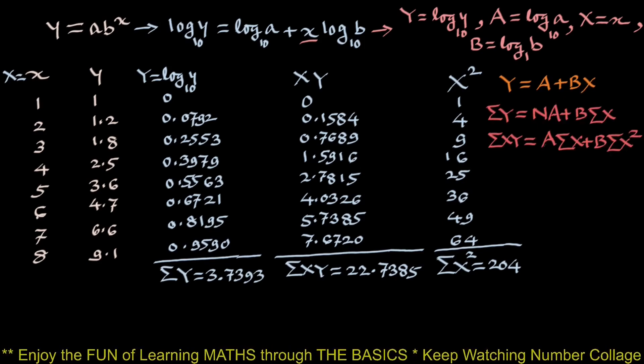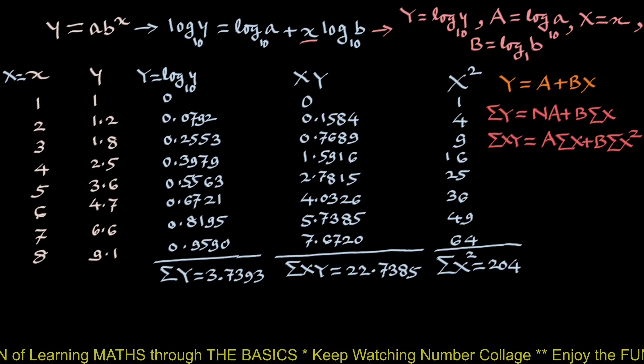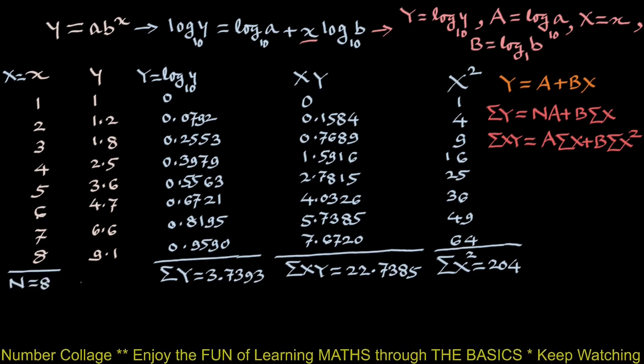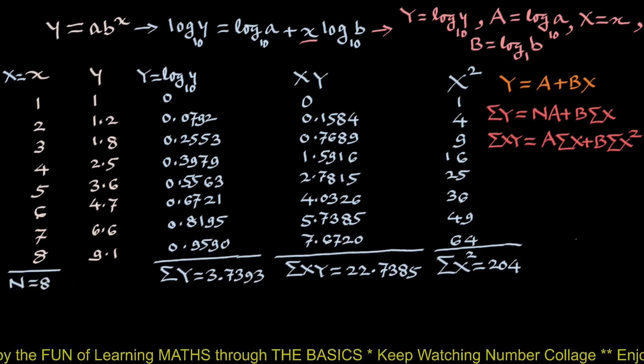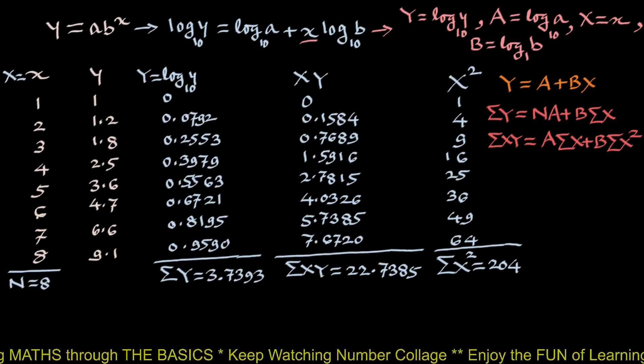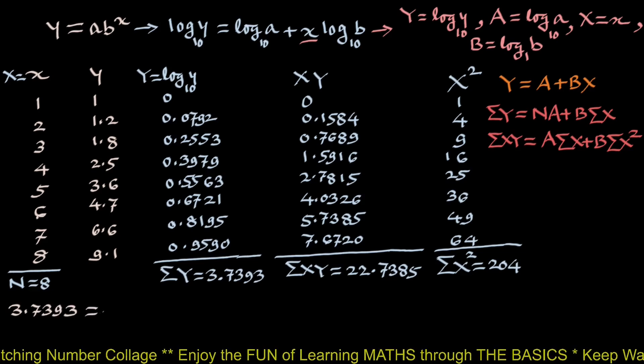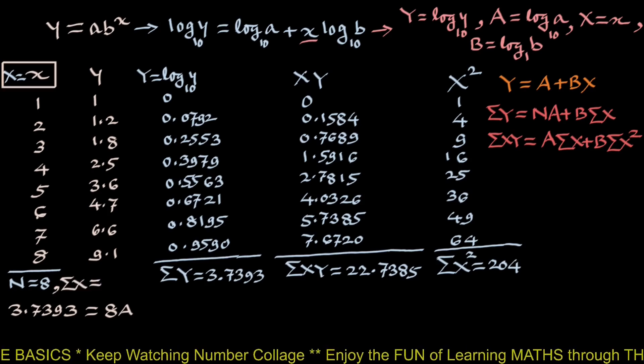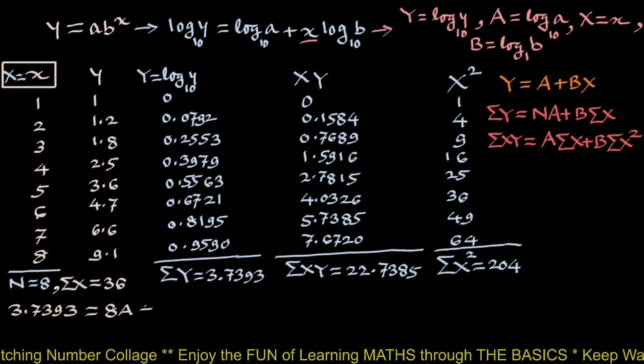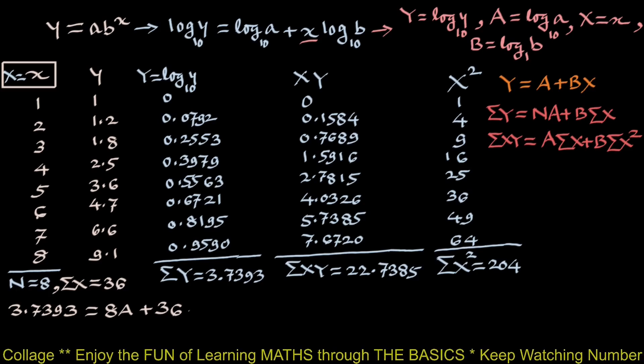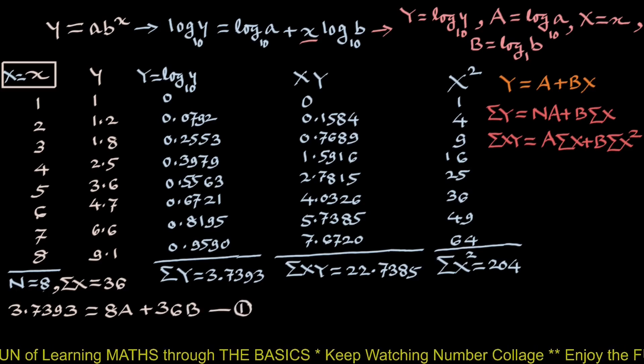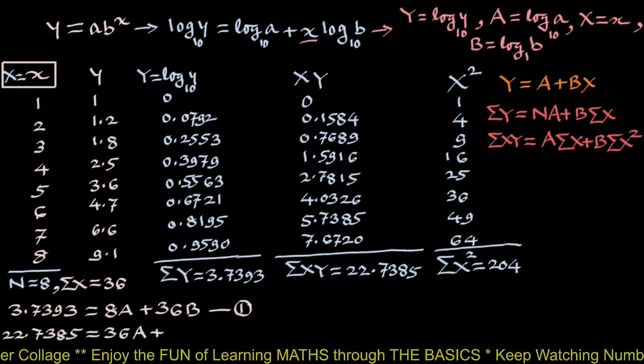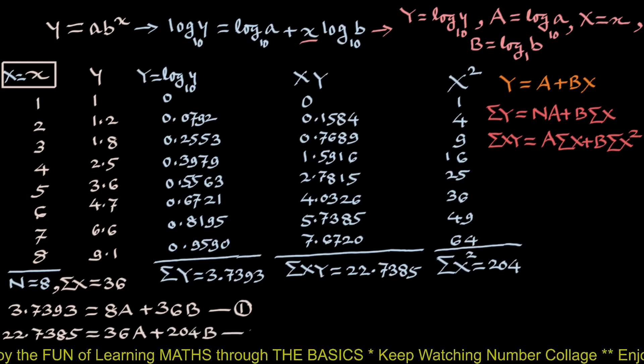We have linear equation Y equals A plus BX and normal equations which we have studied in the first video of the series curve fitting part 1. We will put the values n equals 8, number of observations and other values. We get two linear equations, the first being 3.7393 equals 8 capital A plus 36 capital B. We name this 1. And the second linear equation 22.7385 equals 36A plus 204B. We name this 2.